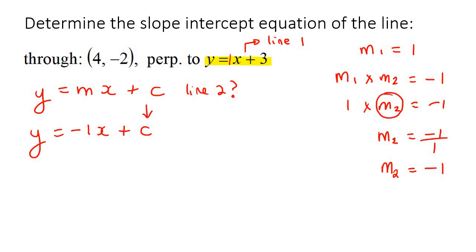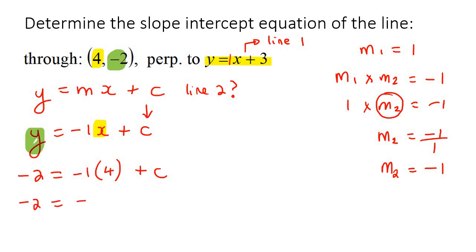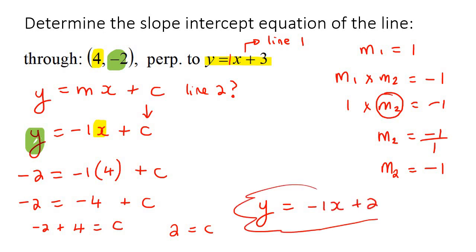How do we find the value of C? We take the given x-value and plug it in, and take the given y-value and plug it in. So we get minus two equals negative one times four, giving us minus two equals minus four plus C. Getting C by itself: C equals negative two plus four, so C equals two. Our final answer is y equals negative one x plus two.